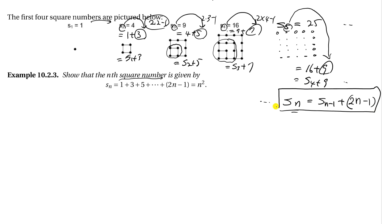The problem with this recursive formula is that to calculate any S_n we need S_{n-1}, and to get that we need S_{n-2}, and so on. Just imagine wanting S(100) — we'd need S(99), which requires S(98), and so on. That's just too much work.